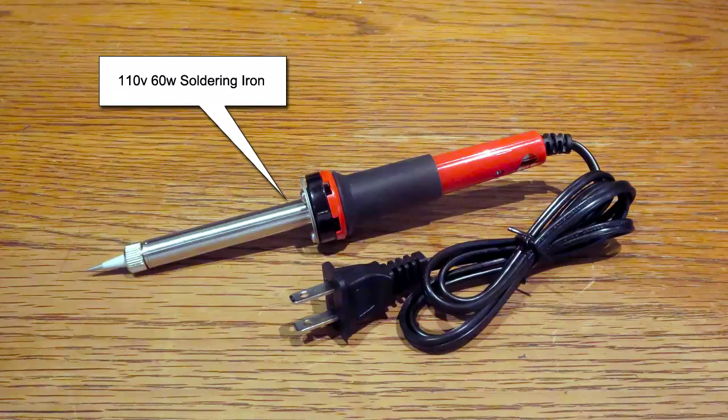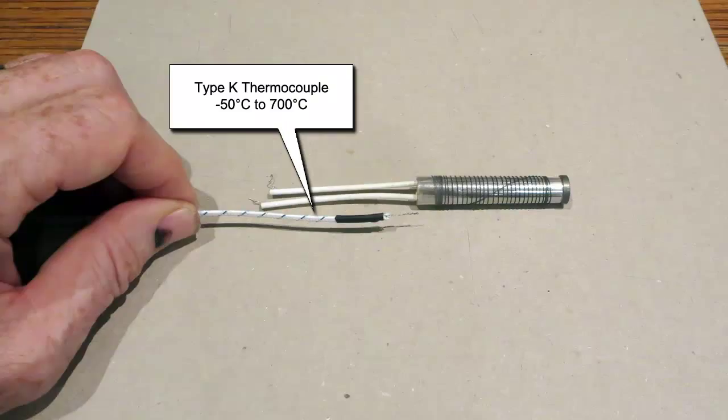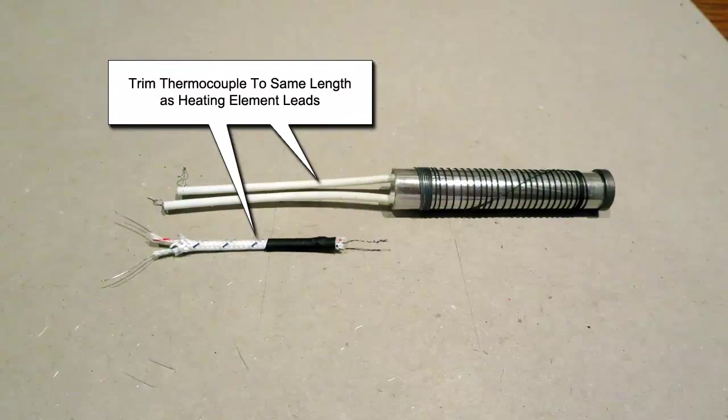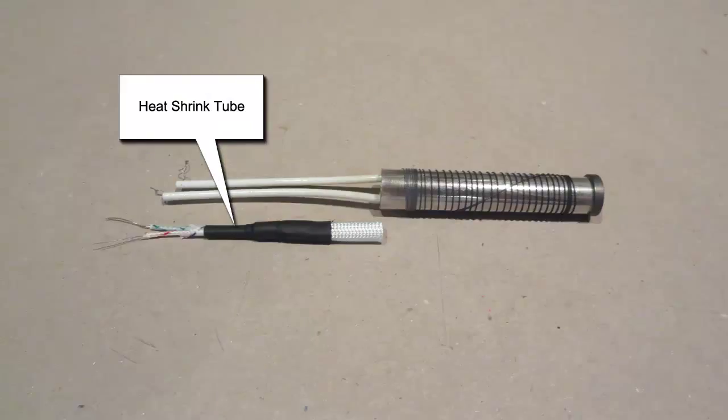This version uses a 110-volt 60-watt soldering iron. The power cord and AC plug will be replaced. This modification works best on soldering irons with a mica tube heating element. It may also be possible to work on a soldering iron with a ceramic heating element but I haven't tried it yet.